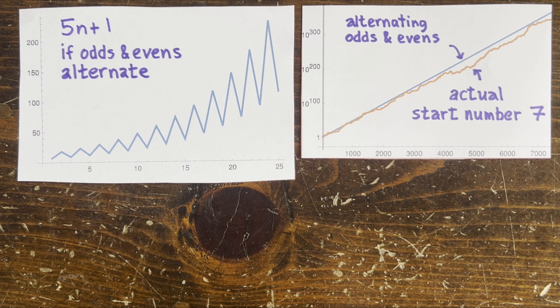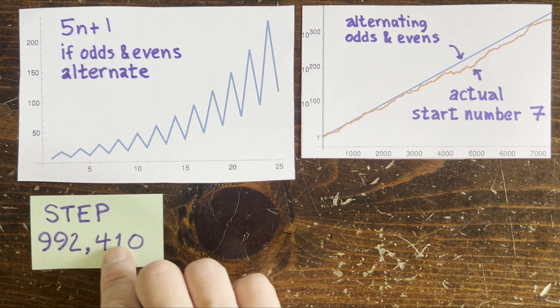And the evens and odds look pretty random walkish, like the digits of pi.